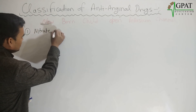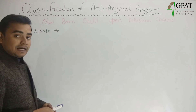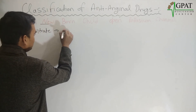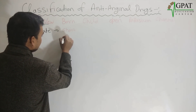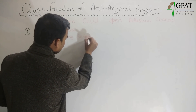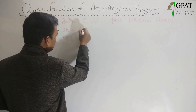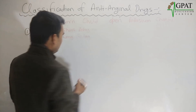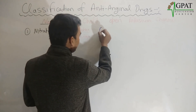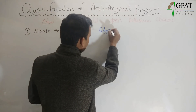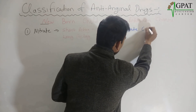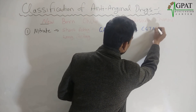The first class is nitrate, and nitrates are sub-classified into two classes: first is short-acting and second is long-acting. In the short-acting category, there is only one drug — glyceryl trinitrate, also known as GTN.